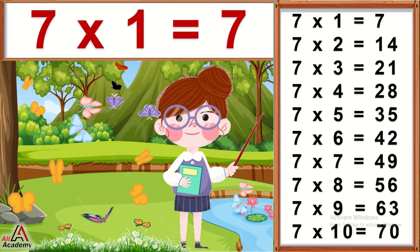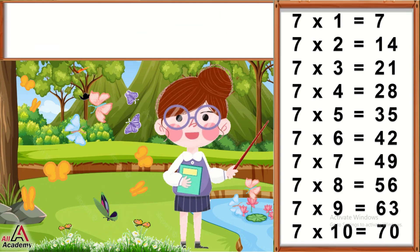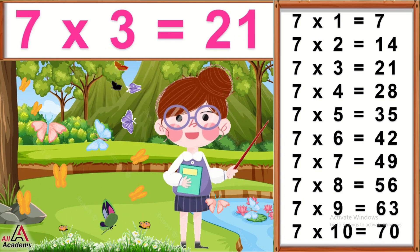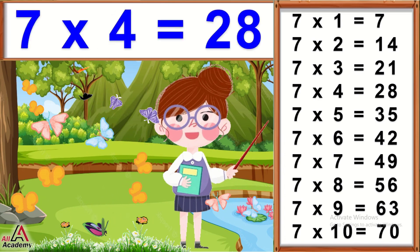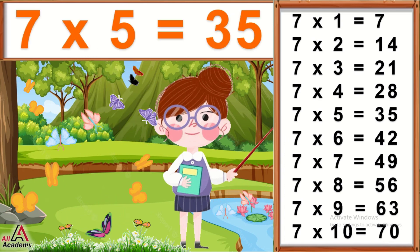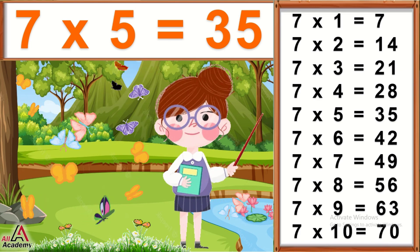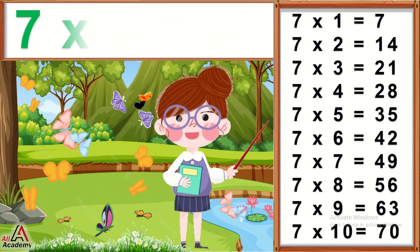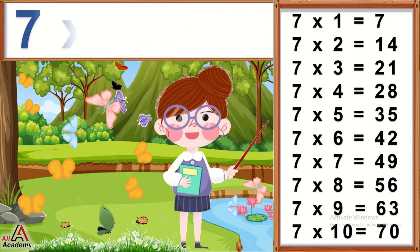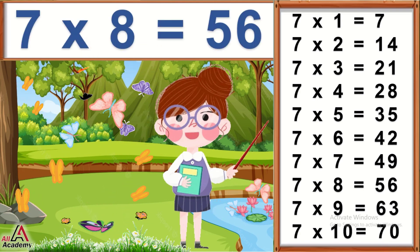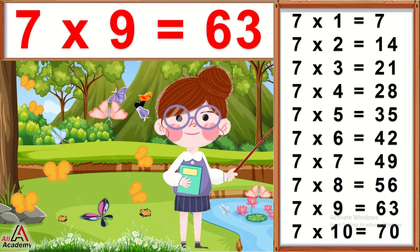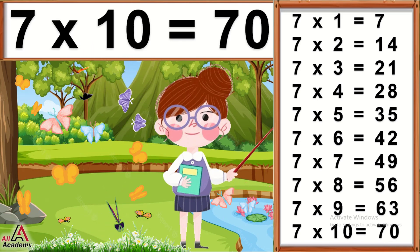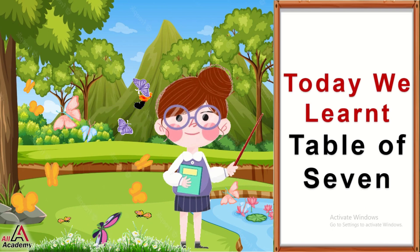7×1=7, 7×2=14, 7×3=21, 7×4=28, 7×5=35, 7×6=42, 7×7=49, 7×8=56, 7×9=63, 7×10=70. Today we learned table of 7.